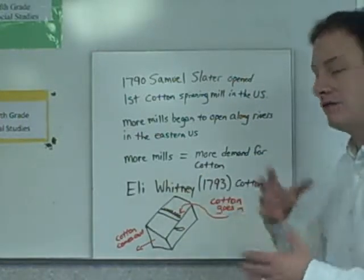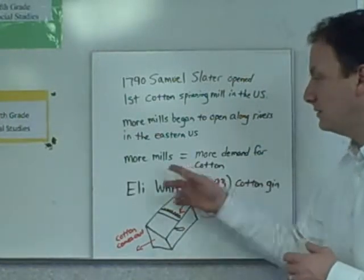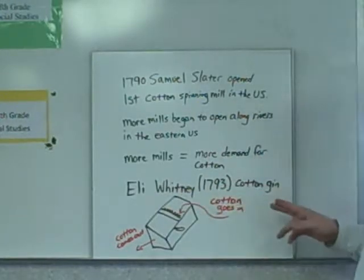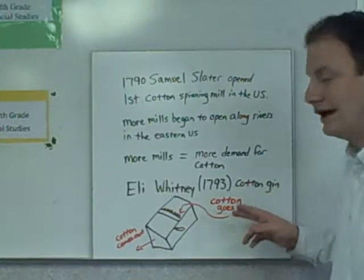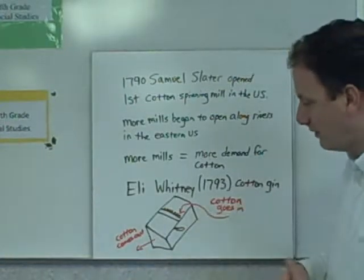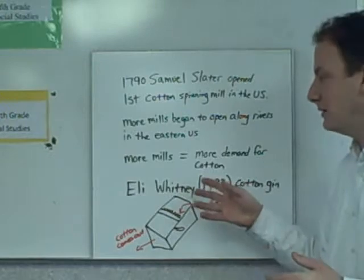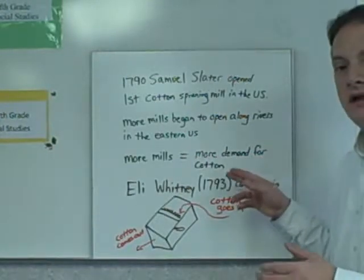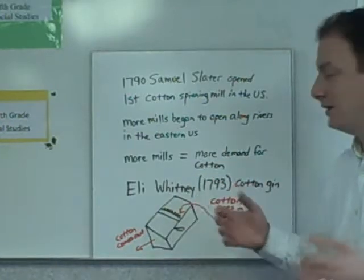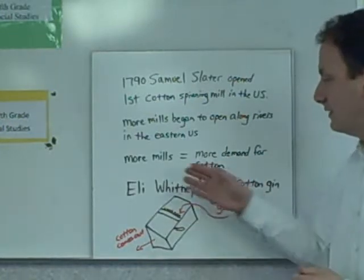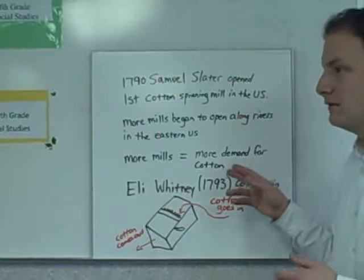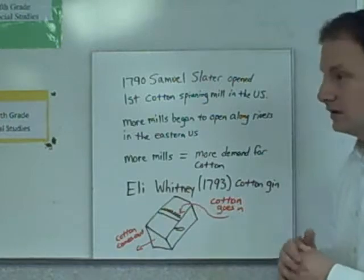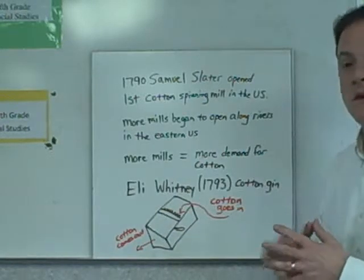Eli Whitney in 1793 invented a machine called the cotton gin. With more demand for cotton, we needed more places to grow it, and so in the South farmers began to switch over and start raising more cotton. The bigger the fields, the more people were needed to help pick the cotton — and this is where slavery comes into the picture.